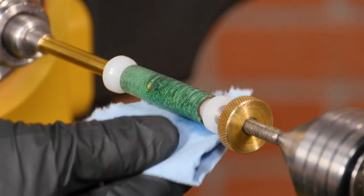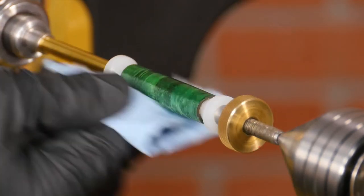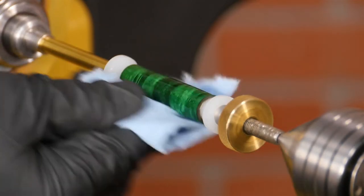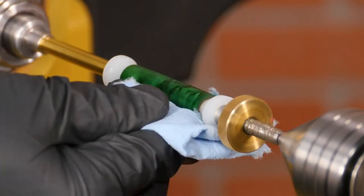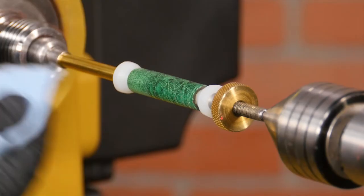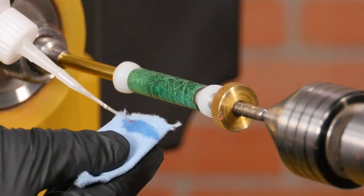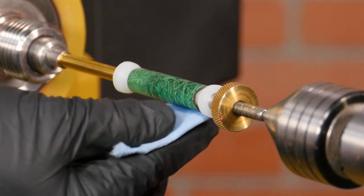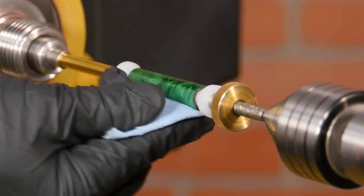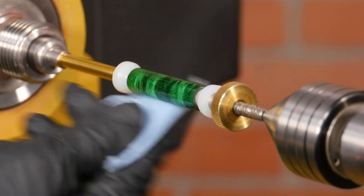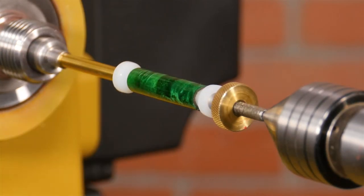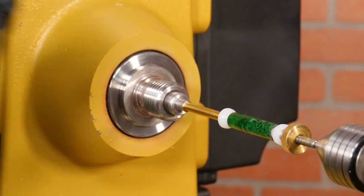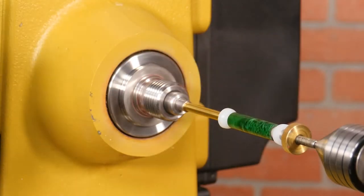Wipe the blank with some denatured alcohol to remove any oil and dust. With the lathe off, coat the blank in thin CA glue. Thin CA glue is water thin and will be soaked up by the blank creating a good base layer. Spray the blank with activator and wait a few seconds before moving on.